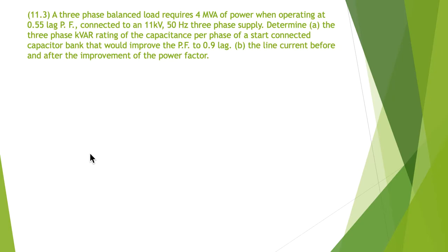Problem 11.3: A three-phase balanced load requires 4 MVA of power when operating at 0.55 lagging, connected to an 11 kV 50 hertz three-phase supply. We want to determine the three-phase kVAr rating of the capacitance per phase of a star connected capacitor bank.